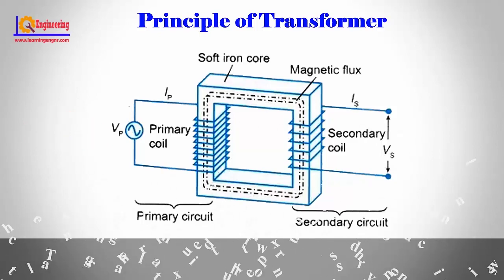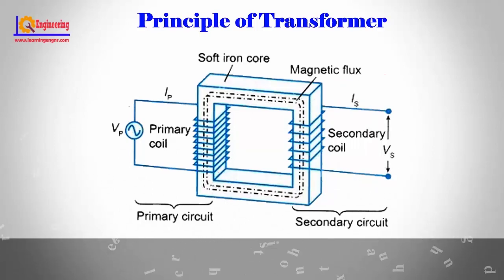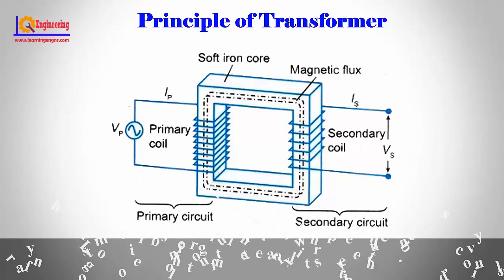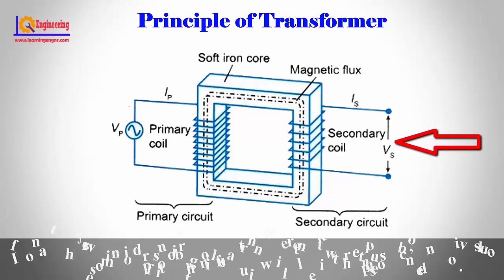The alternating current through the winding produces a continually changing flux, or alternating flux, that surrounds the winding. If any other winding is brought nearer to the previous one, obviously some portion of this flux will link with the second.